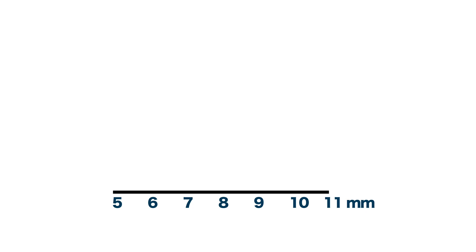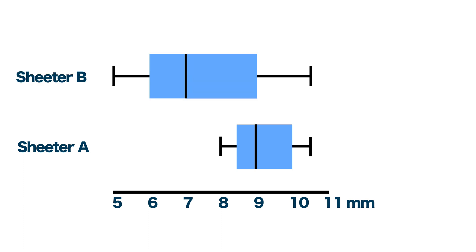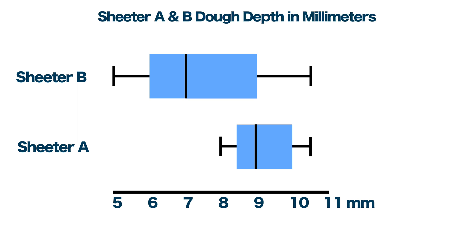With the five required numbers calculated, you drew the box and whisker plot for sheeter A, then repeated the above steps to complete a box and whisker plot for sheeter B. Last but not least, you added the title on the top and the source of the data at the bottom.